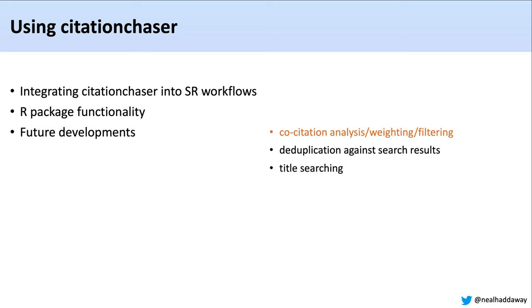We also want to build a tool to allow people to deduplicate their Citation Chaser results against a larger set of bibliographic search results, to show which are unique so they don't need to screen again articles already screened in their normal evidence synthesis workflow. We are also in the process of designing functions to allow people to search on titles, so that when you upload an RIS file and a record doesn't have a DOI, you'll also be able to search for titles — although title searching is not particularly efficient due to minor changes causing matching problems.